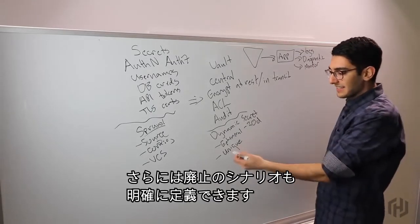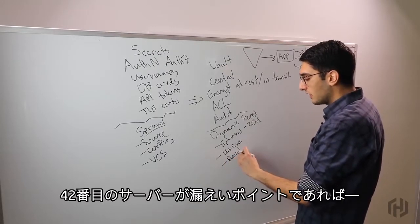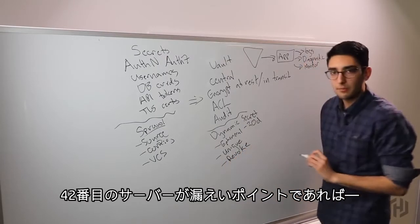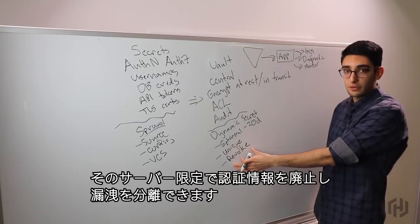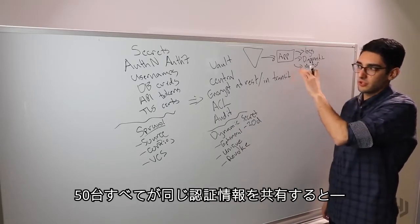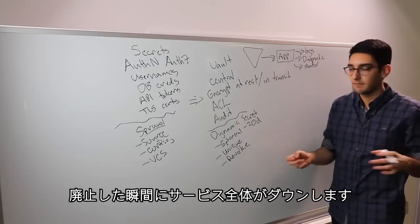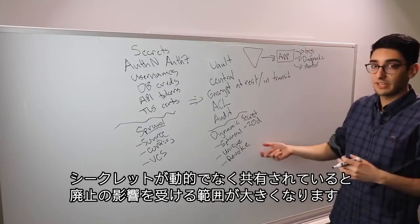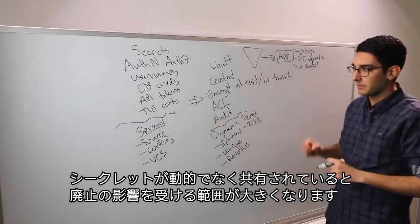The last thing that this lets us do is have a much better revocation story. So now if we know web machine 42 was our point of compromise, we can revoke the username and password for just web machine 42 and isolate that leak. But if all 50 machines were sharing the same username and password, the moment we try and revoke it, we'd cause the entire service to have an outage. So the blast radius of a revocation is much larger when you have a shared secret versus a dynamic secret.